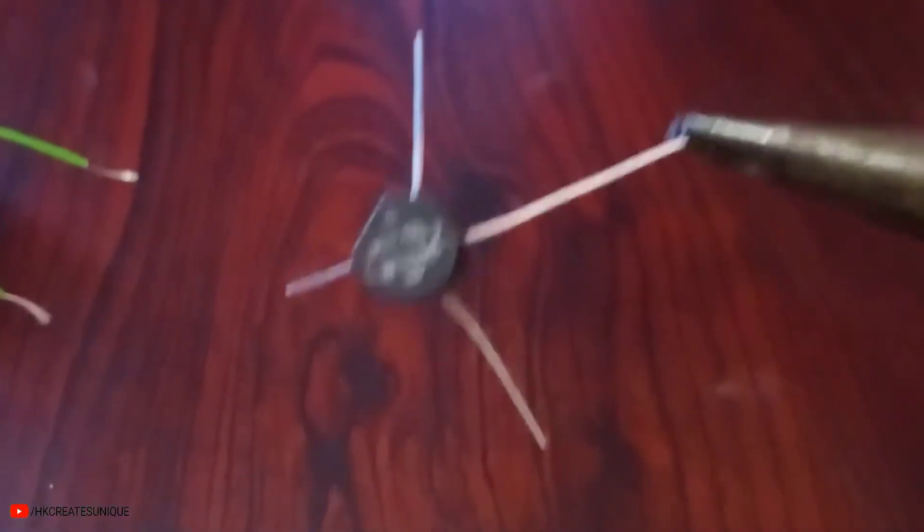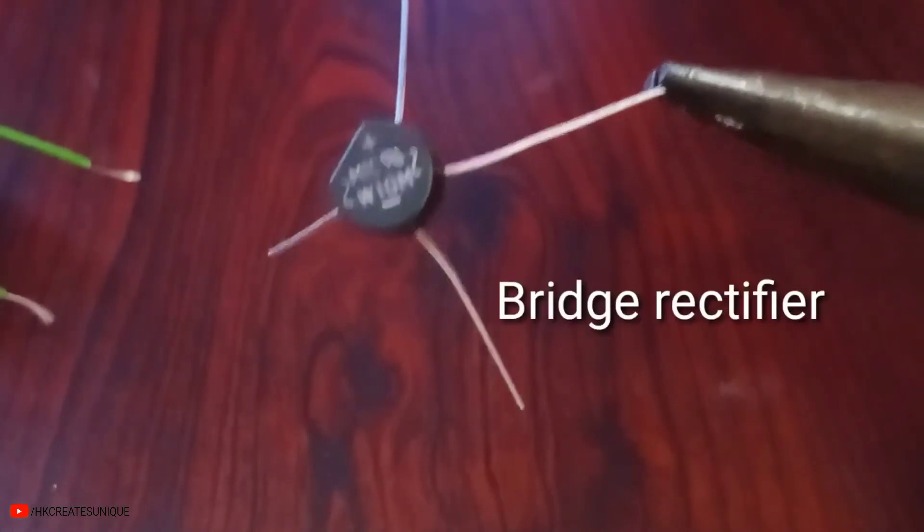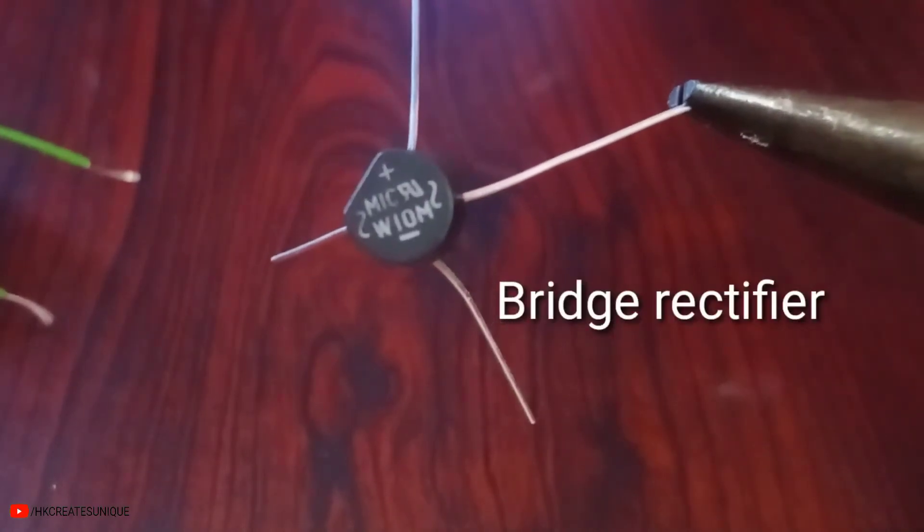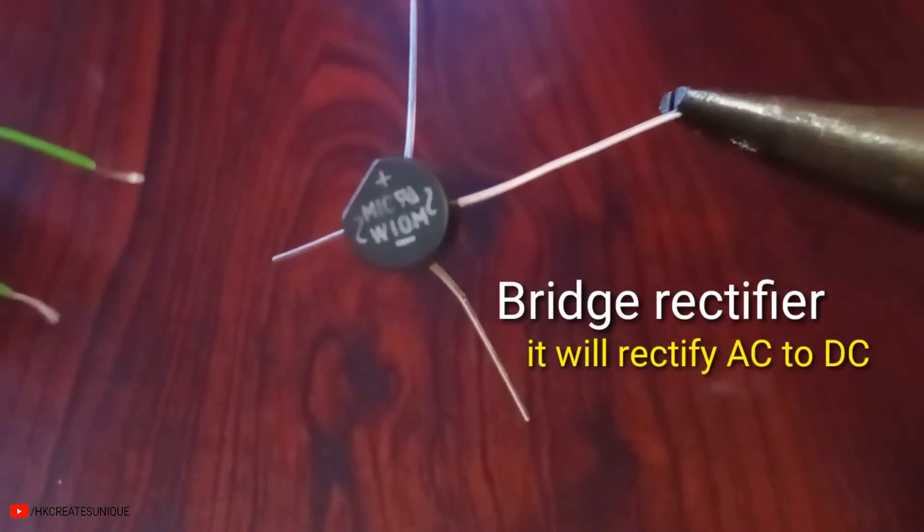To solve this we can use a bridge rectifier. A bridge rectifier will rectify AC to DC. A bridge rectifier can be made using four diodes like this.